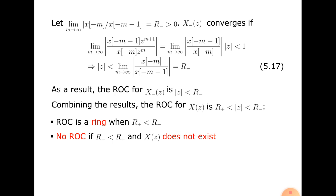As a result, the ROC of x−(z) is |z| < r−. Combining the results, the ROC of x(z) is r+ < |z| < r−, which is a ring when r+ is less than r−. There is no ROC if r− is less than r+, and x(z) does not exist. This is the main concept of the ROC.